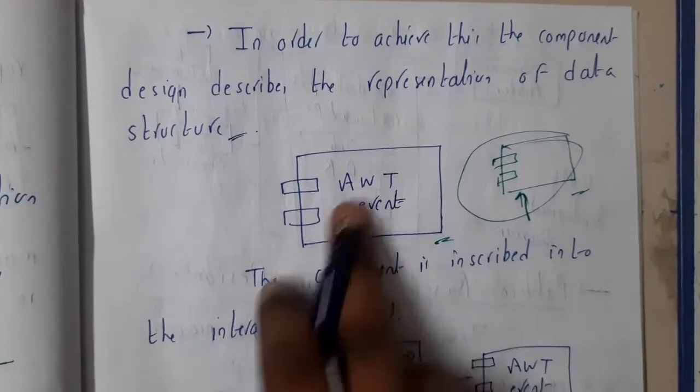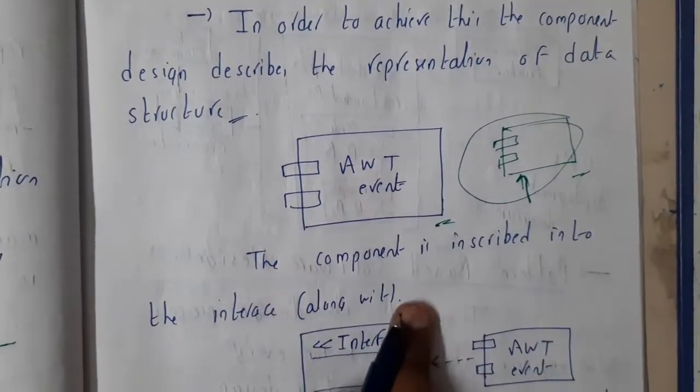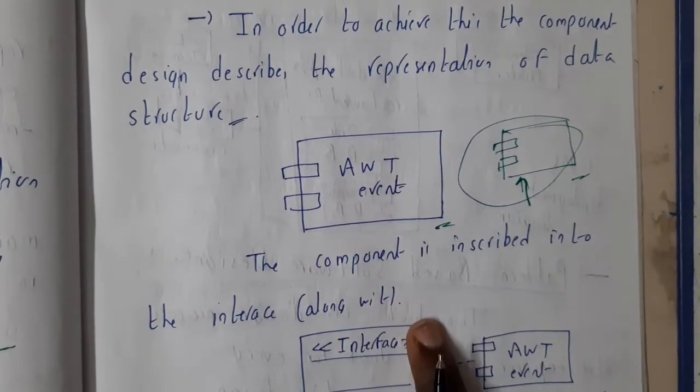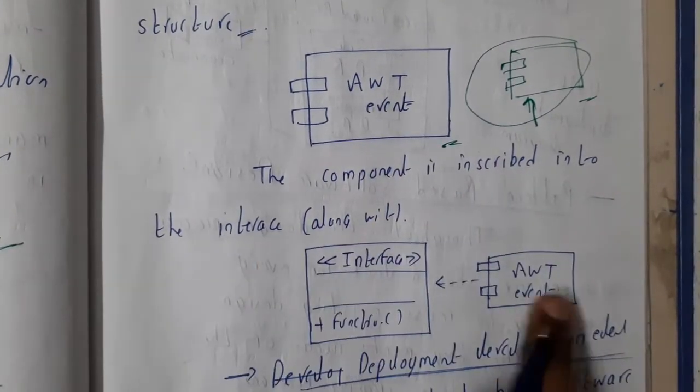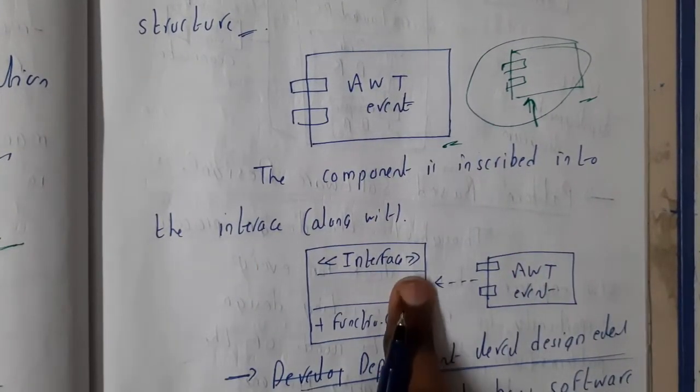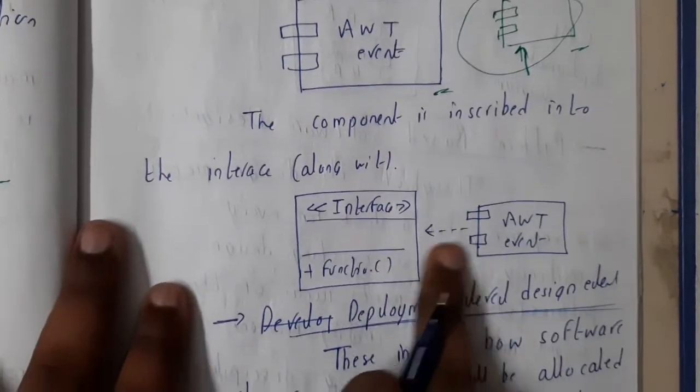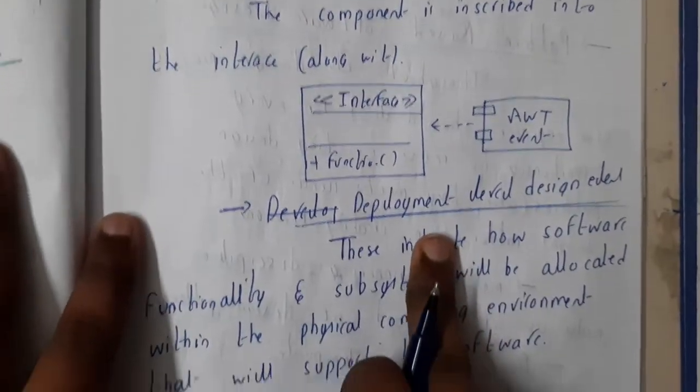In order to achieve this, component design describes the representation of data structure. Assume that this is an event - that is an AWT event. The component is inscribed into the interface, so this kind of component will be related in this way.